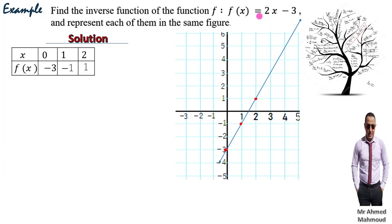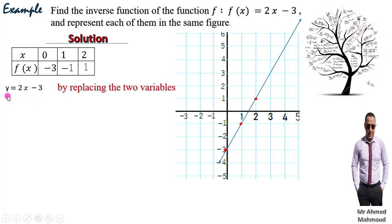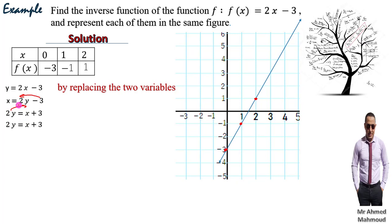Now let's find the inverse function. Let y = 2x − 3, swap x and y: x = 2y − 3. Move −3: 2y = x + 3. Divide by 2: y = (x+3)/2. So f⁻¹(x) = (x+3)/2.